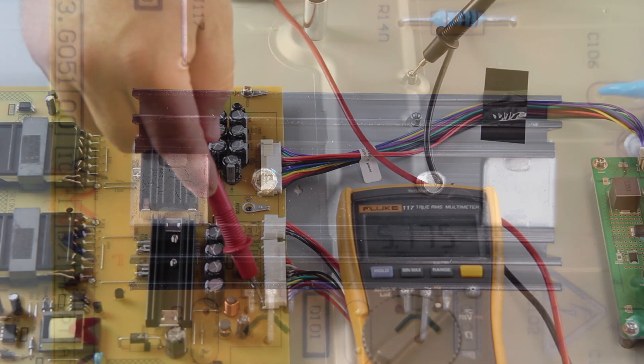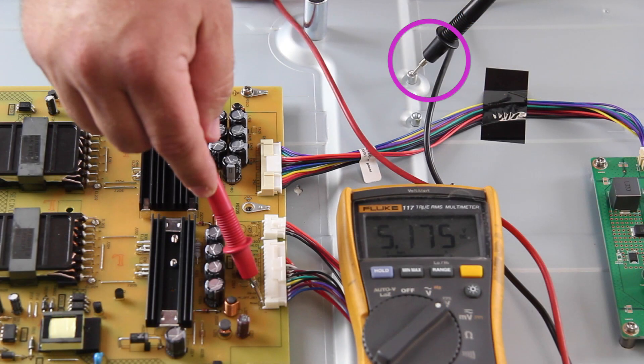When testing a voltage on the cold side, the ground negative lead should be placed on a metal part of the chassis to serve as the ground for the voltage testing.